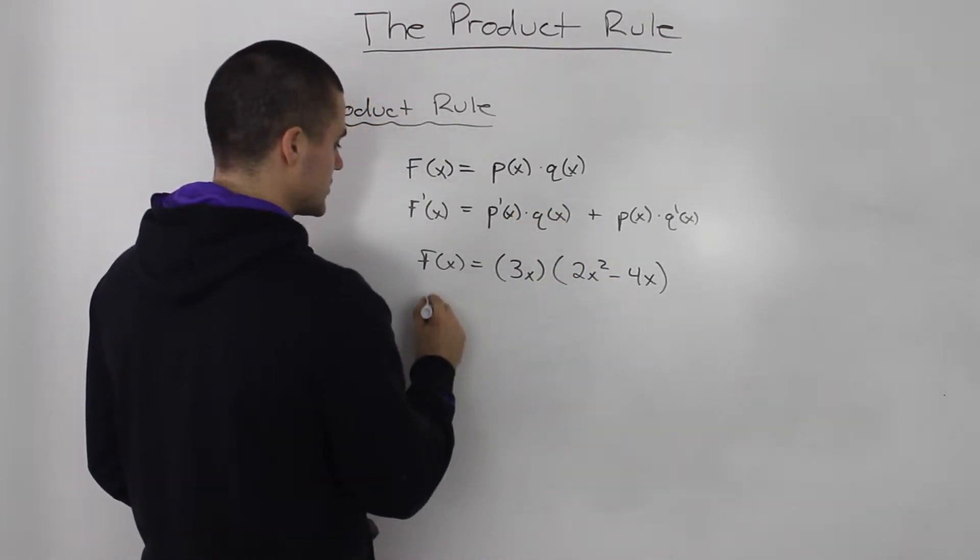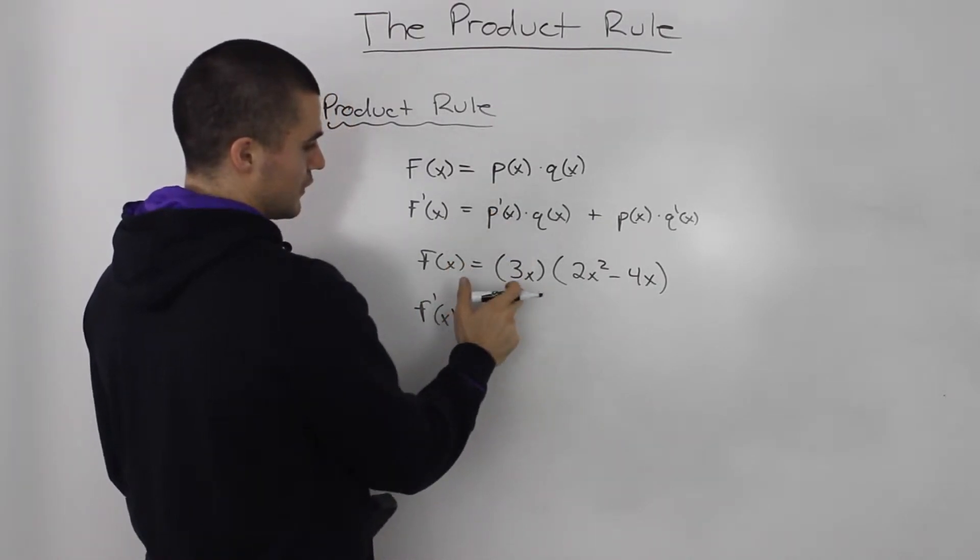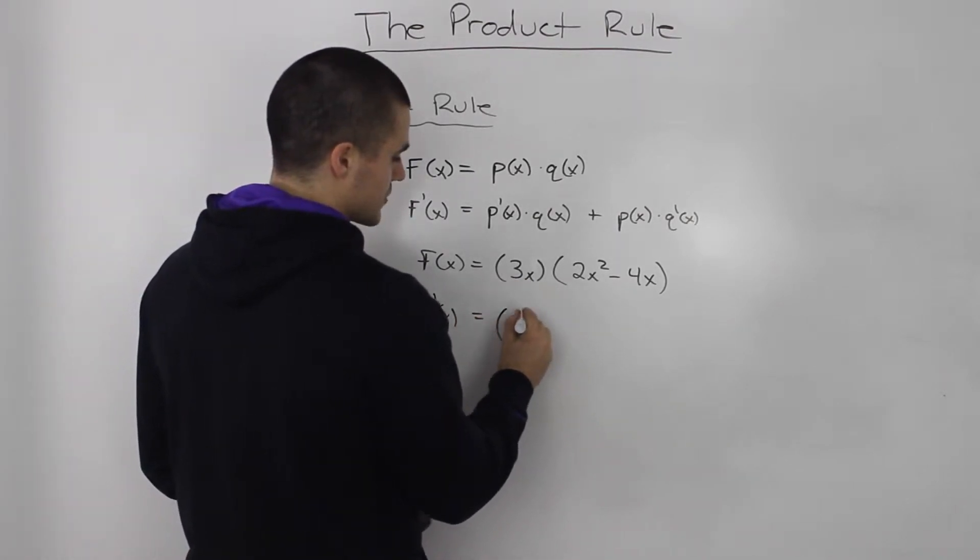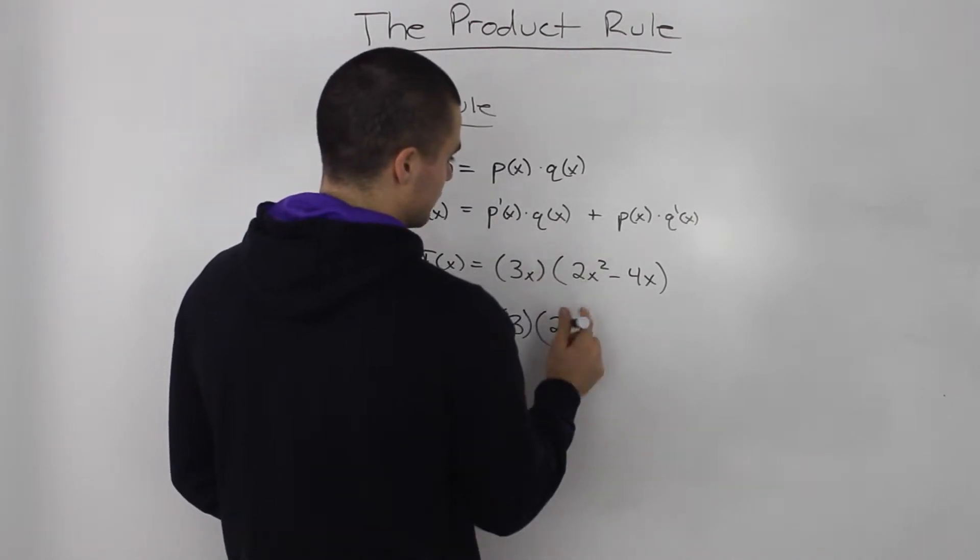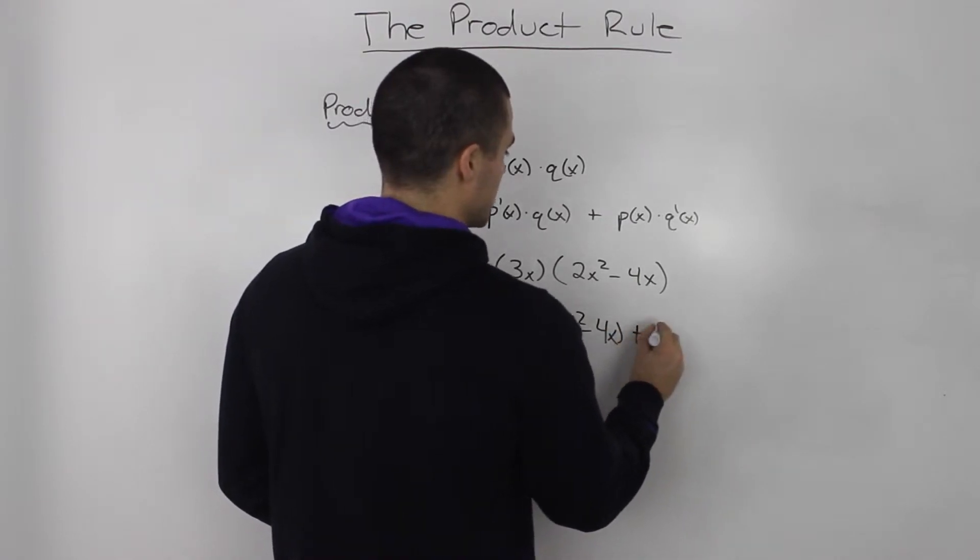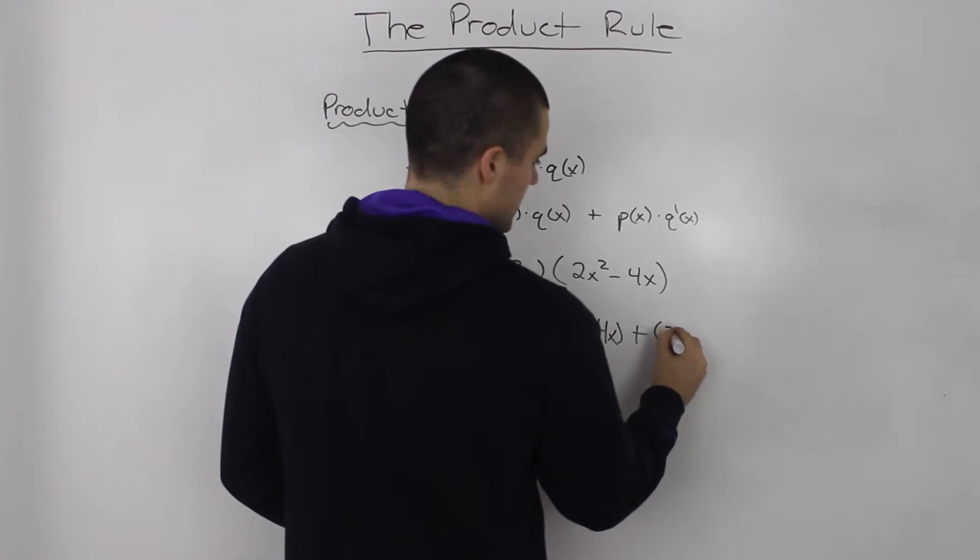When we take the derivative, we can just apply the product rule here. We'll take the derivative of the first function. So, the derivative of 3x is just 3. We'll keep the second function as itself plus we keep the first function as itself. So, that will just be 3x.